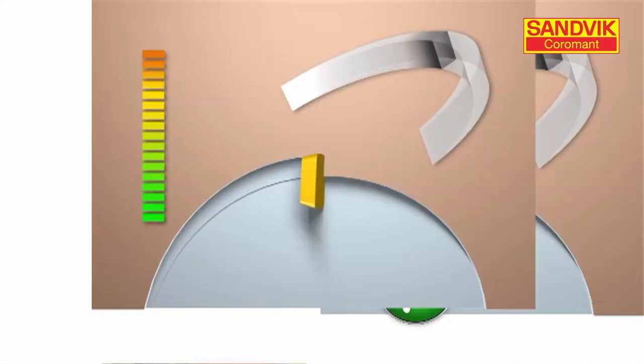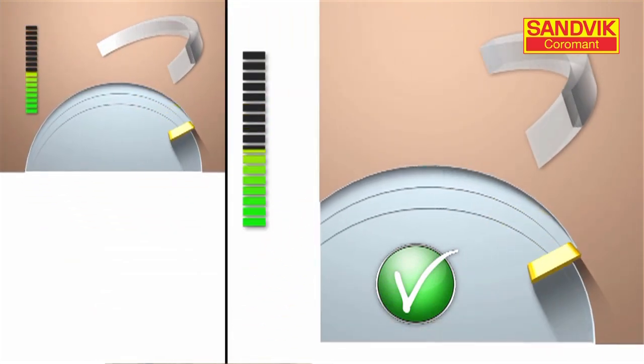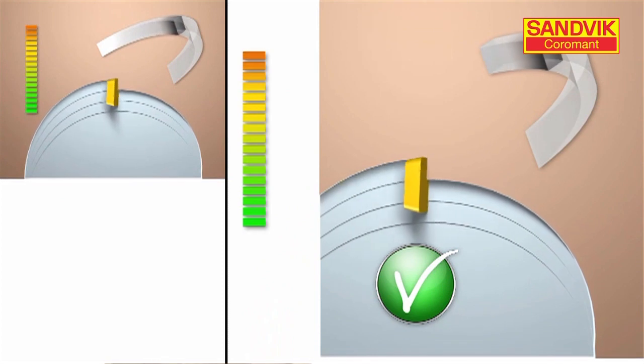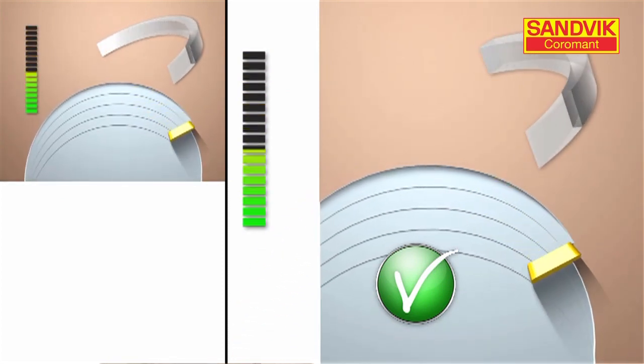To ensure proper cutting action, we simply reposition the cutter so that approximately 70% of the diameter is engaged. This ensures immediate cutting action. We're climb milling and generating a thick to thin chip, resulting in less stress on the insert.